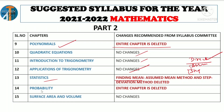Next coming to Probability — entire chapter is deleted. Because you have already learnt this lesson in 9th standard. The same concepts repeat, so the complete entire lesson is deleted. It will not be in the exam. Last lesson is Surface Area and Volume.